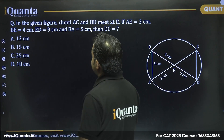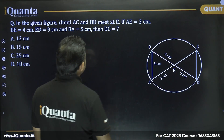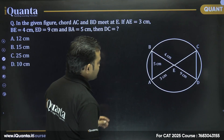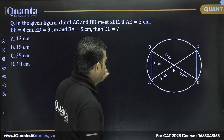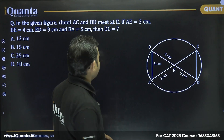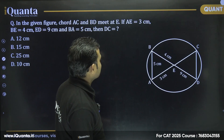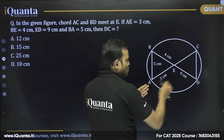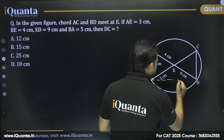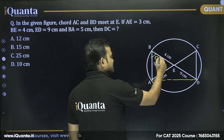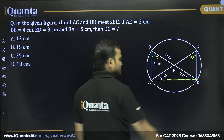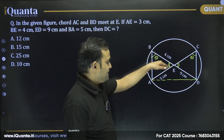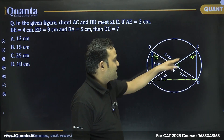Next question: in the given figure, chords AC and BD meet at E. BA is equal to 3 centimeters, ED is given, BA equals 5 centimeters — find the length of CD. If we join AD, the angle made by chord AD on the circumference is θ. The vertically opposite angles are also equal, so triangle BEA is similar to triangle CED.